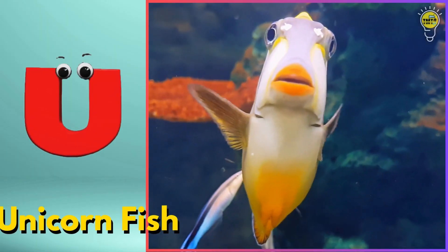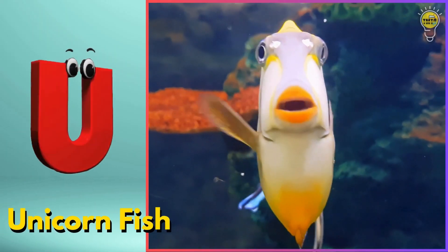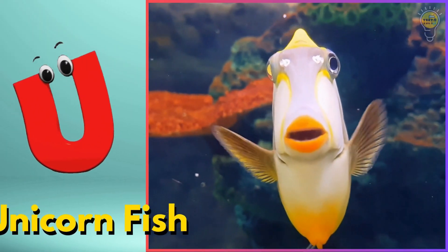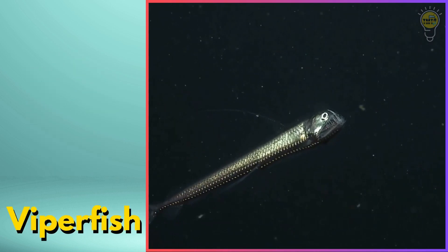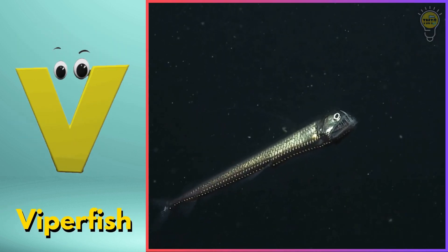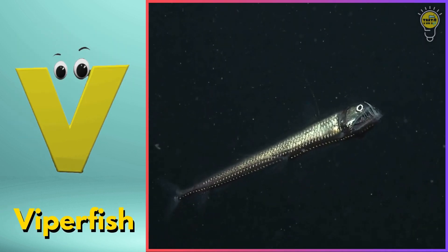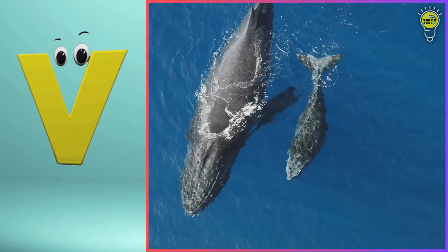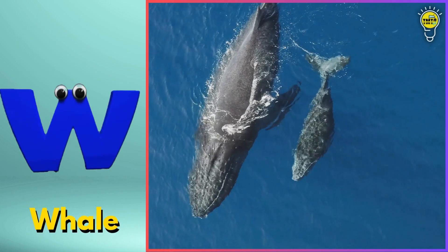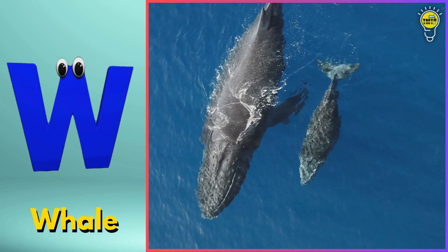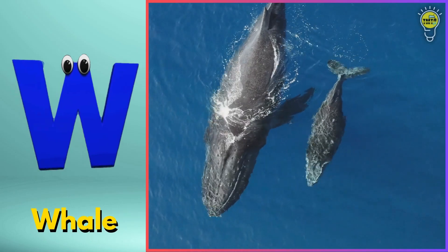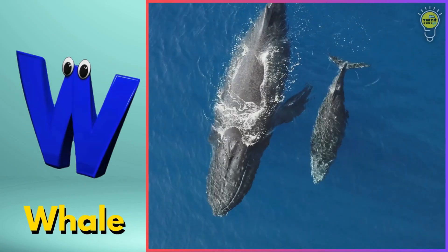U is for unicornfish. A, a, unicornfish. V is for vikrafish. V, v, vikrafish. W is for whale. W, w, whale.